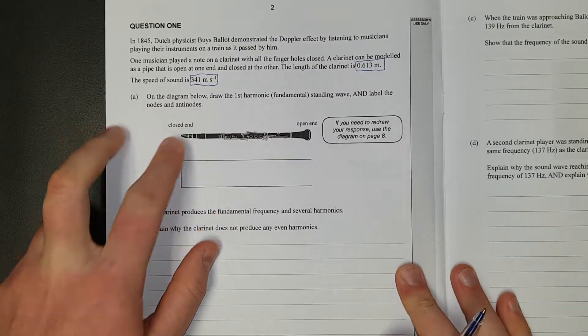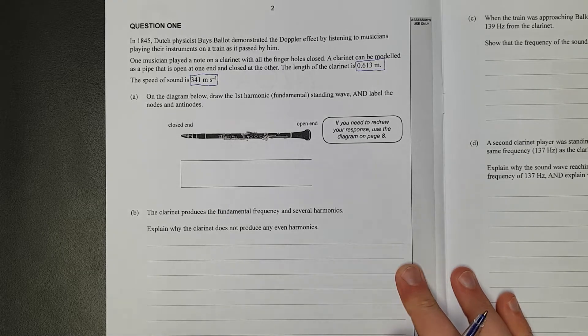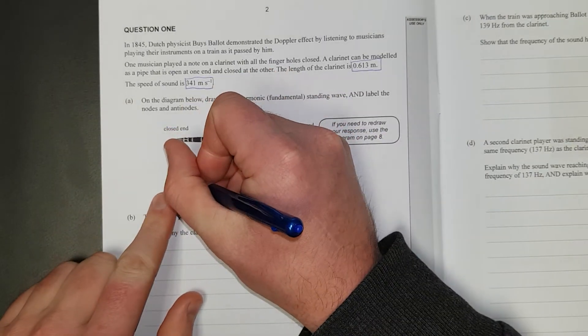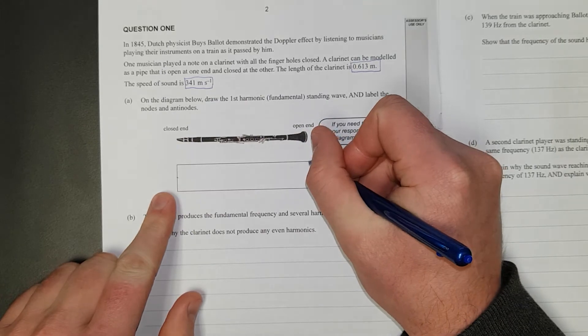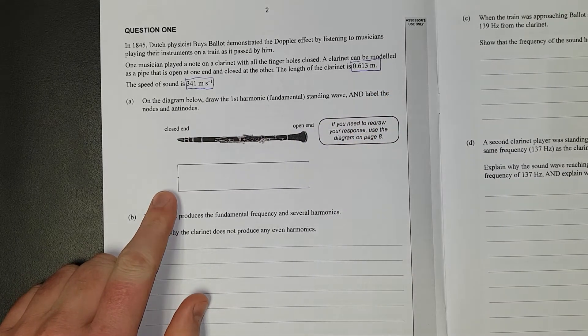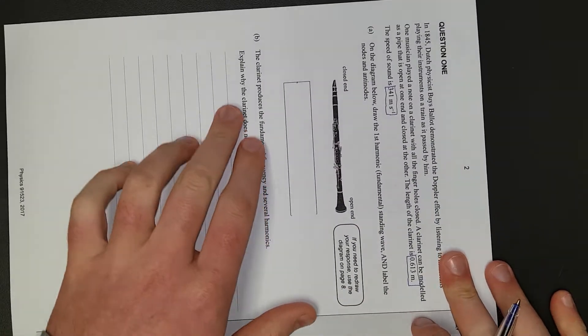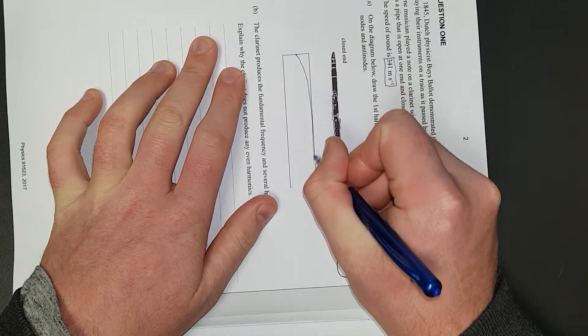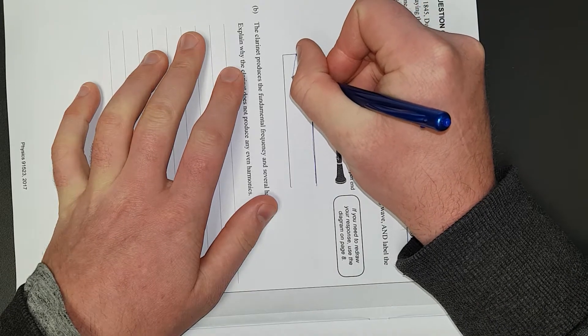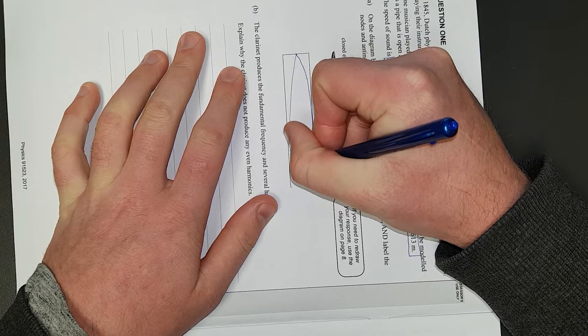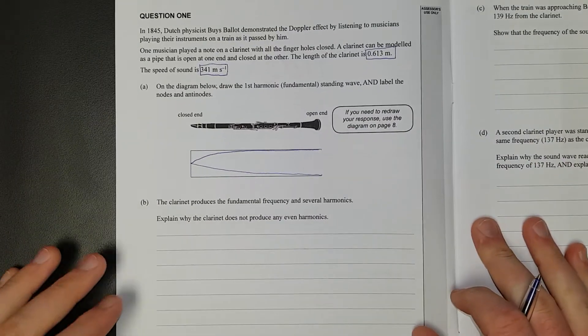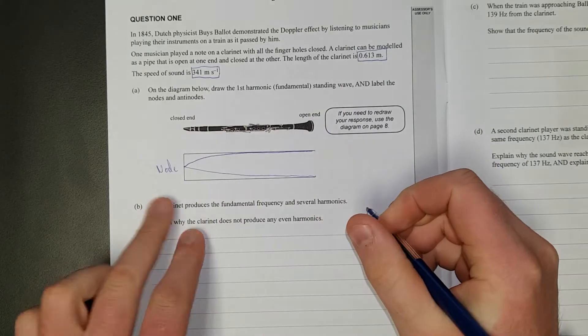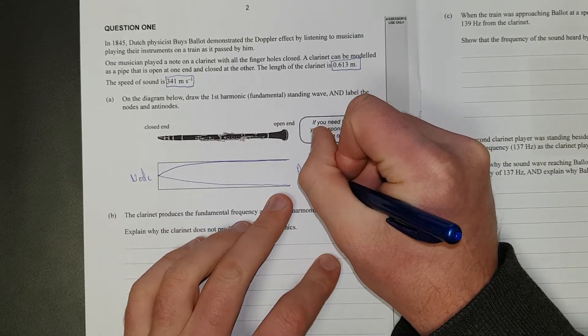Question A. On the diagram below, draw the first harmonic fundamental standing wave and label the nodes and the anti-nodes. So at the closed end, you're going to get a node because the movement of the air isn't really going to be moving at all. So we've got a node here and we're going to have an anti-node here. So it means we're going to have top and the bottom of the wave here. I'm a bit artistically challenged, so I don't know if I'll be able to do this very well. But you want it always to be curving. There we go. It's a bit wonky, but you can see it's a quarter wavelength. This is the node. And this is the anti-node.